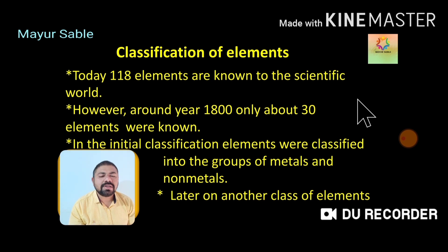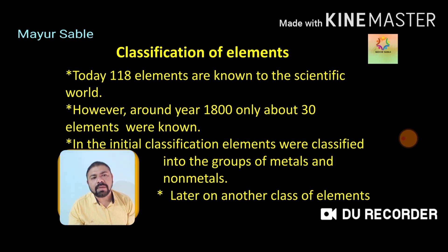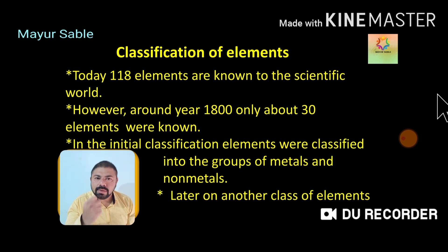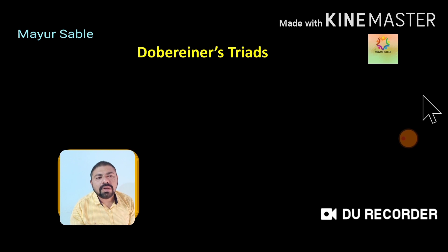So many elements, their properties, their uses, and the formation of various compounds by chemical reaction with each other made it necessary to categorize all the elements in a definite manner. Scientists tried to group them according to some specialized characteristics. Among those scientists, the first who successfully tried to classify elements into groups was Dobereiner.